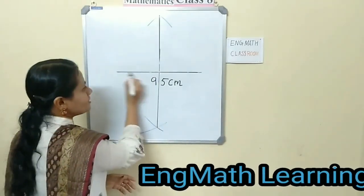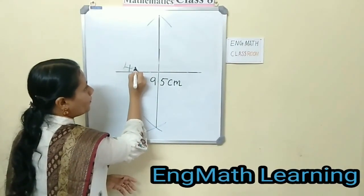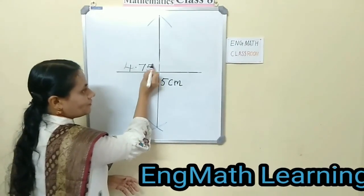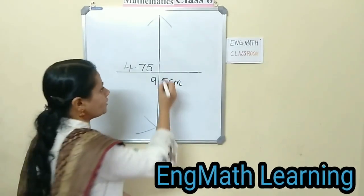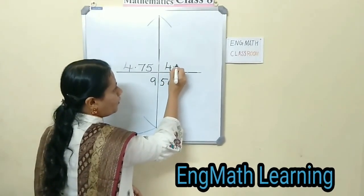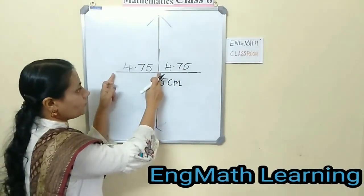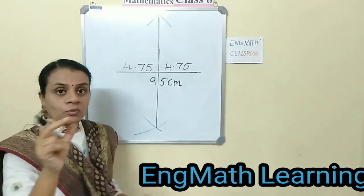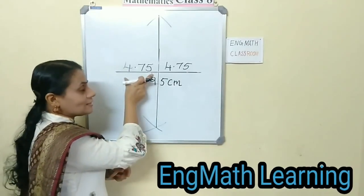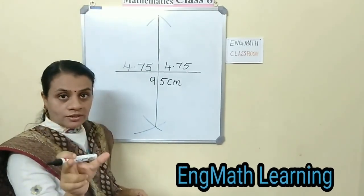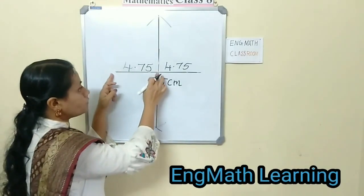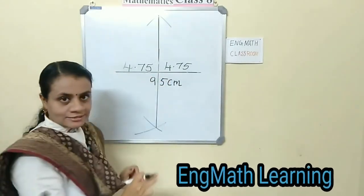So what is this length? Up to here we got 4.75, and this length also 4.75. Now we got this length 4.75, and what is this length? This is a side of a square. Now we have to construct a square of this length.